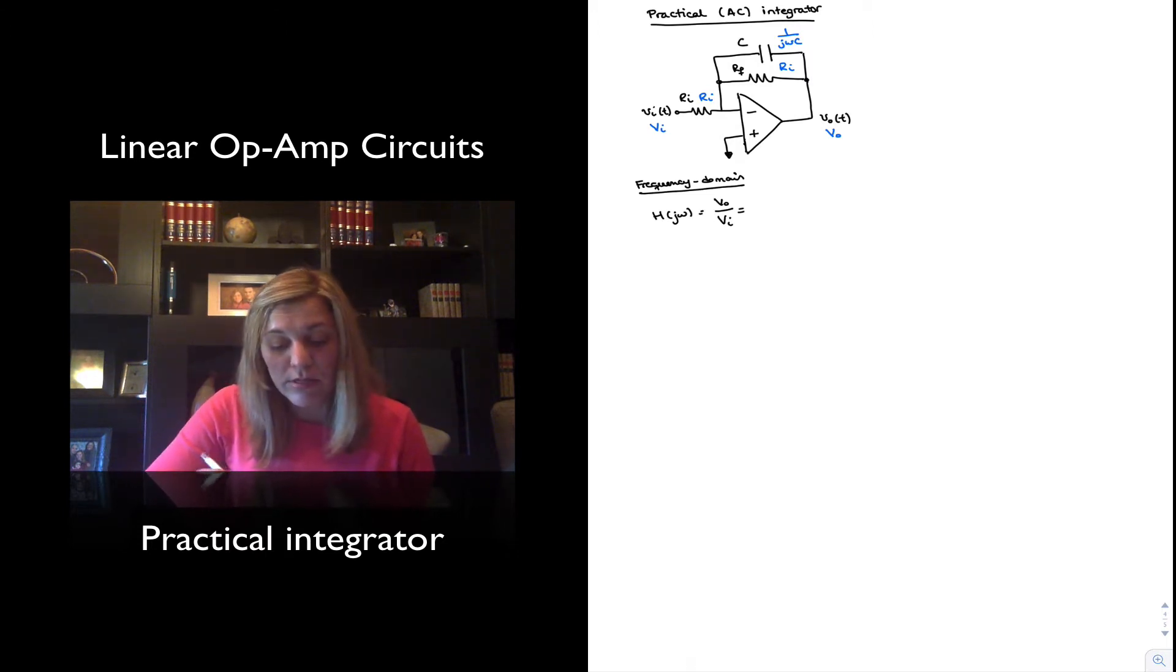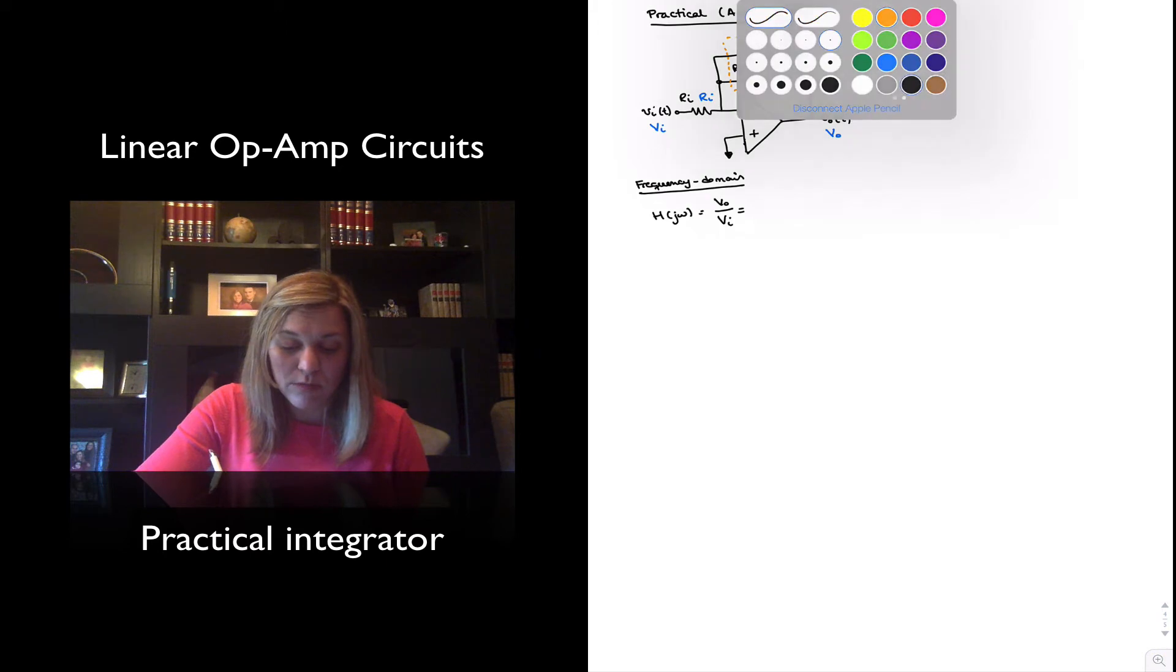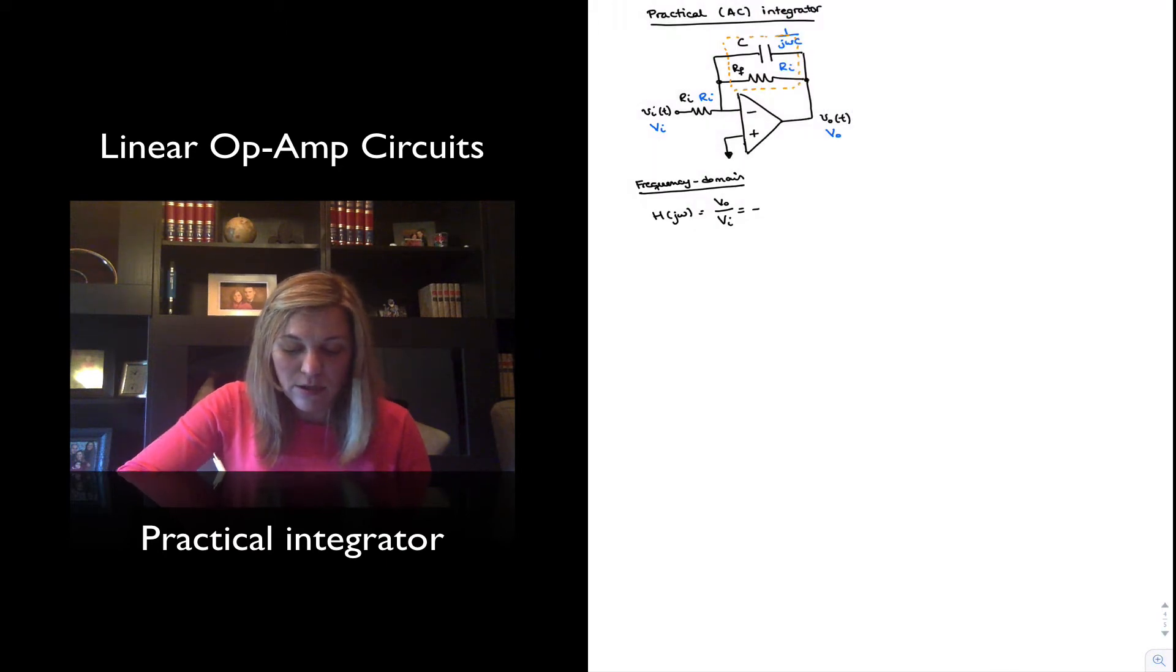Now notice that this resembles the structure of an inverting amplifier, where the feedback impedance is the parallel combination of the impedance of the capacitor and the resistor RF, and then there is an input impedance Ri. And so you can basically state generally the gain or the transfer function in this case, because we are in the frequency domain, will be equal to negative ZF over Zin.